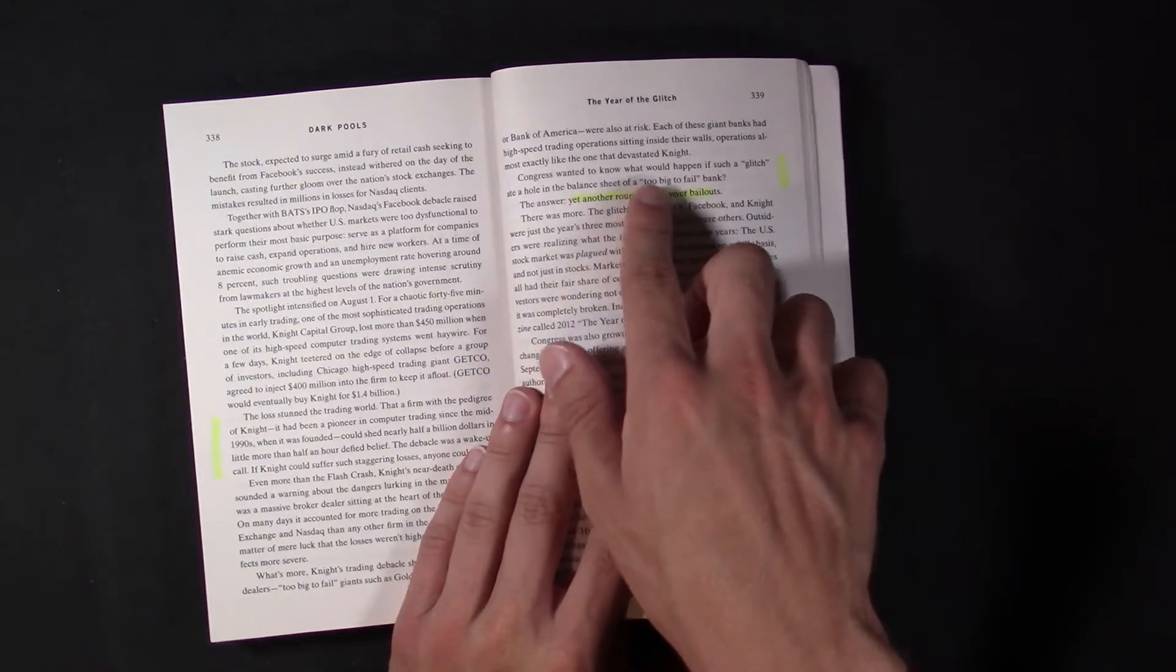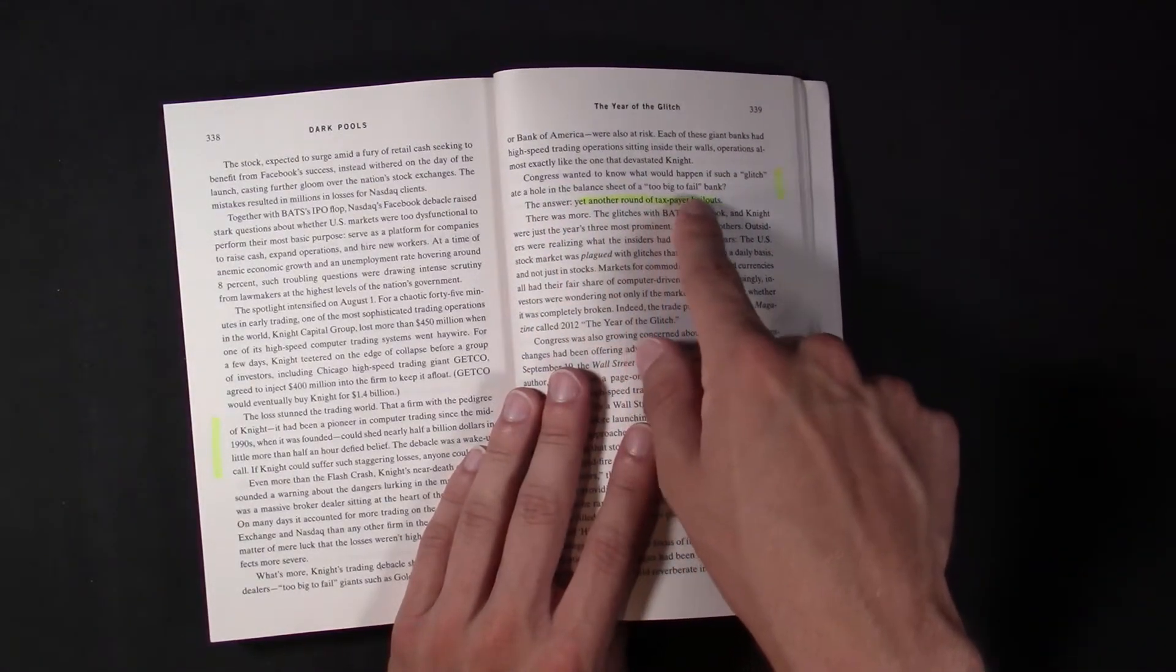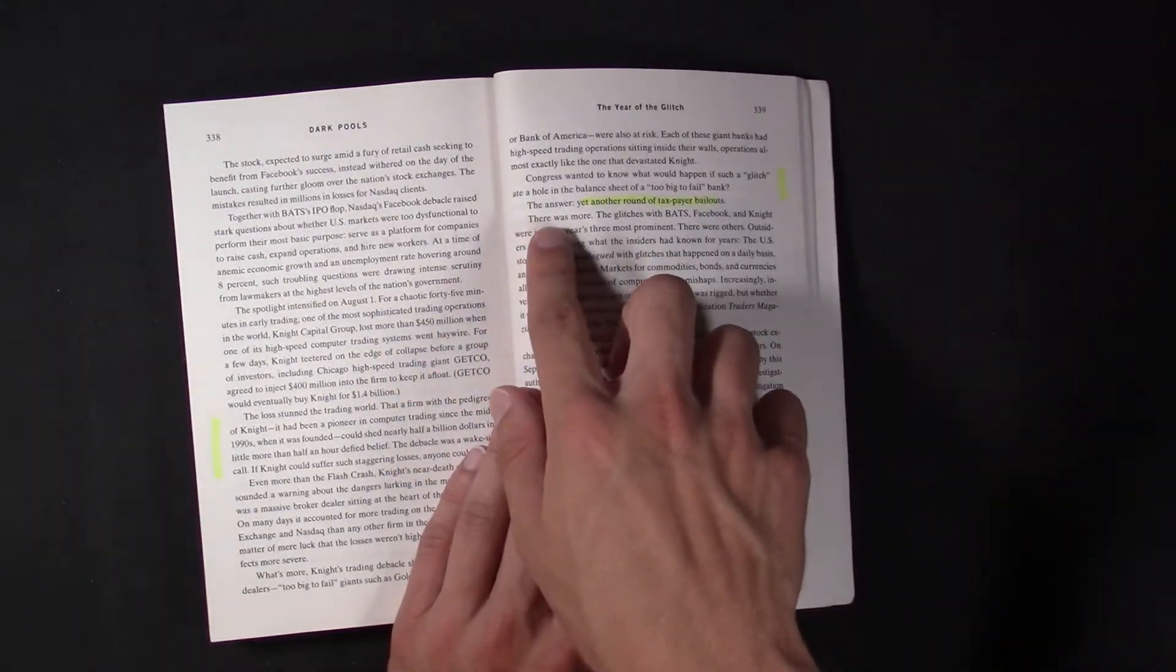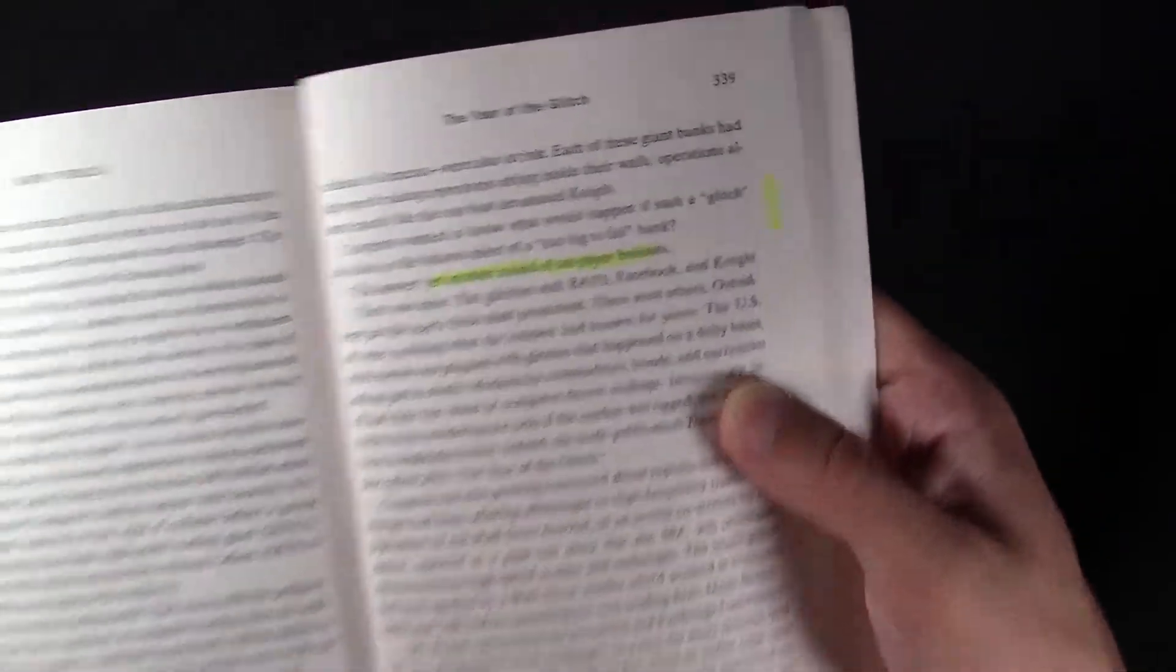Congress wanted to know what would happen if such a glitch ate a hole in the balance sheet of a too-big-to-fail bank. This happened in history. The answer, yet another round of taxpayer bailouts. Yet another round of taxpayer bailouts.